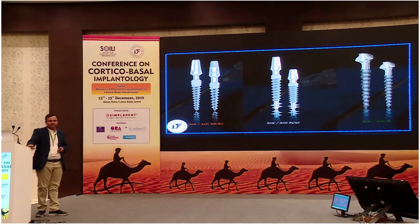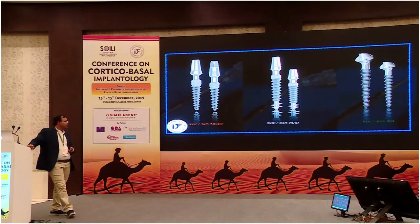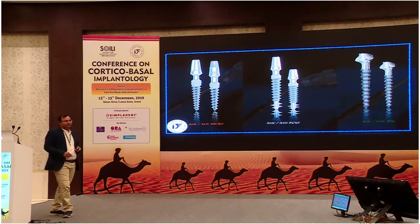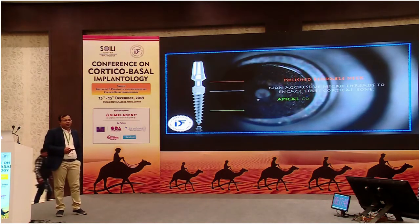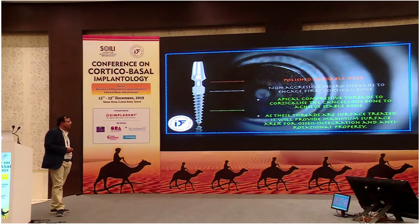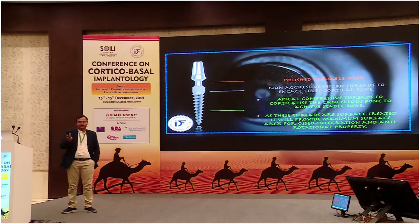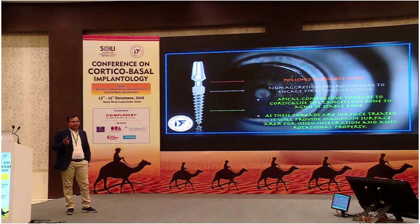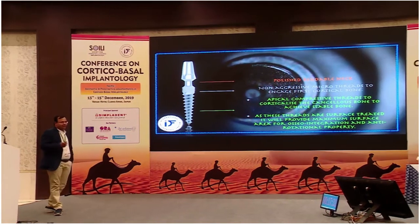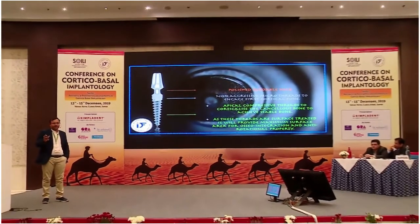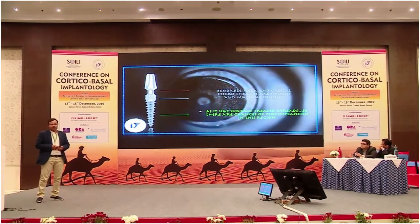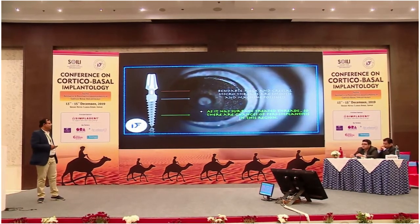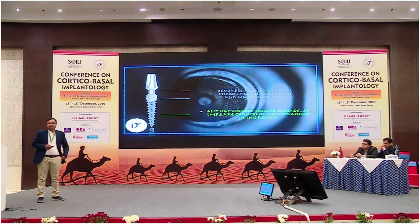There are different variants of this implant: KOS micro, KOS plus which is a combination of BCS and KOS, and KOS MU. The KOS implant has a bendable neck which is polished, and non-aggressive threads which engage the cortical bone or crestal cortical bone. The apical threads are compressive, which will corticalize your cancellous bone and provide stable bone. As these threads are surface treated, they provide maximum surface area for osseointegration and anti-rotational properties. The bendable neck and crestal micro threads are machine polished, which prevents peri-implantitis; however, the apical threads are surface treated, so there are always chances of peri-implantitis.